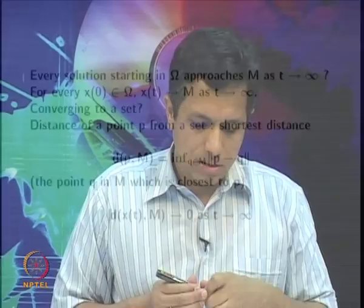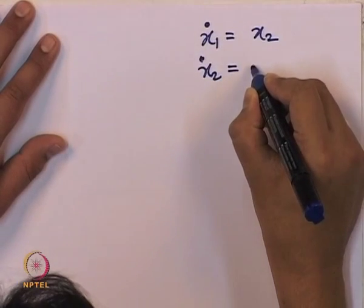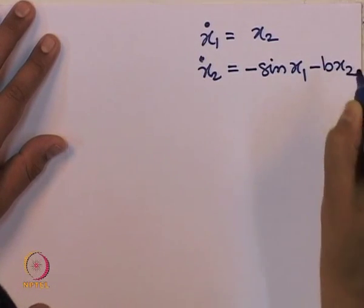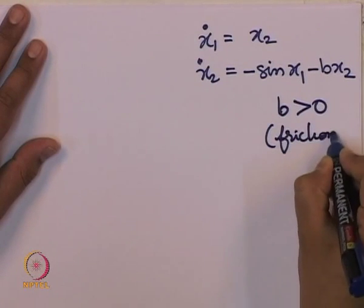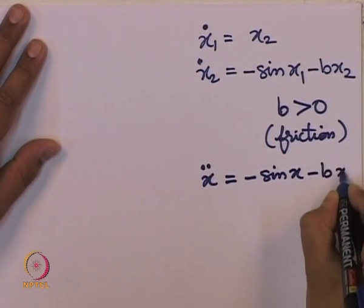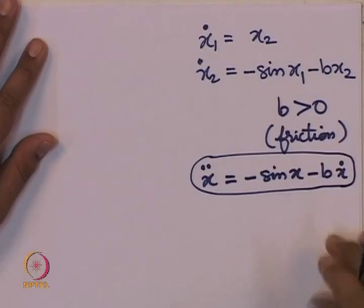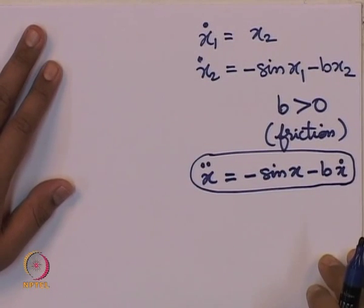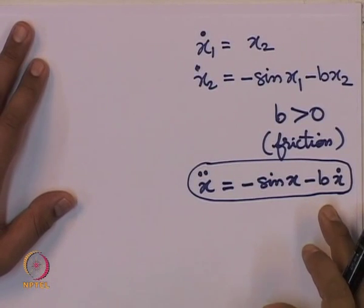We had already encountered the pendulum example in which the natural energy function did not satisfy strictly less than 0. The original second-order differential equation for the pendulum with friction was converted to two first-order differential equations by introducing x2, where x1 is the angle and x2 is its derivative. We will now study the equilibrium point and its stability properties.